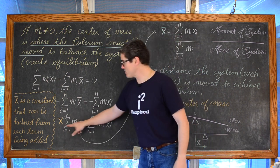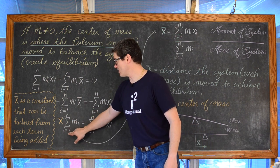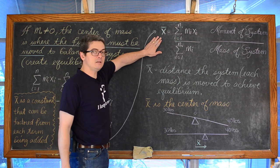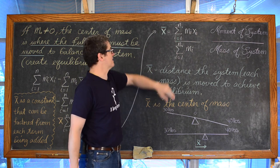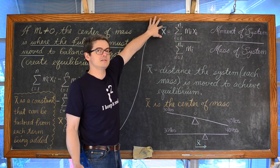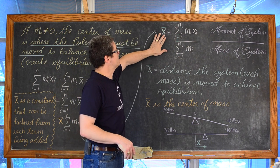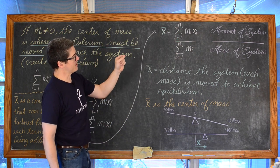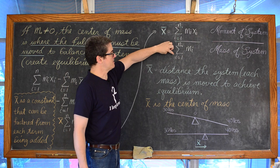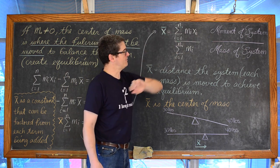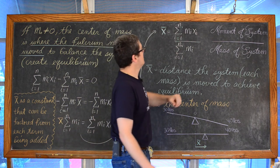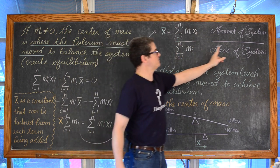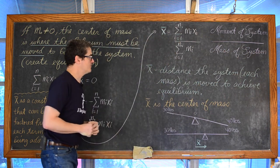Once we have x-bar times the summation from i equals 1 to n of m sub i, we can divide that on both sides, and we get x-bar is equal to the summation from i to n of m sub i times x sub i, divided by the summation from i equals 1 to n of m sub i. What you're basically looking at is the moment of that entire system — the sum of all of those moments — divided by the overall total mass of the system.